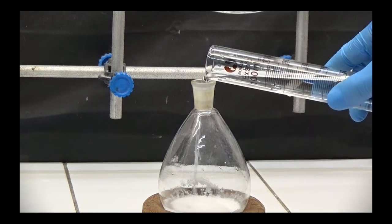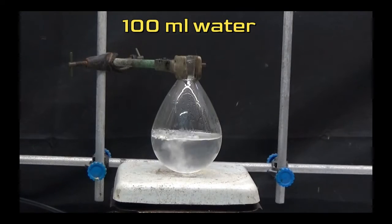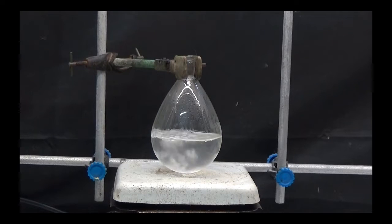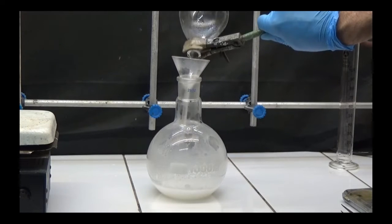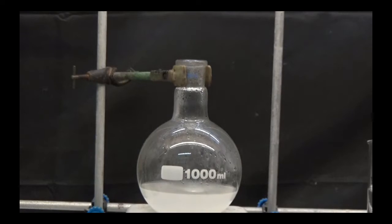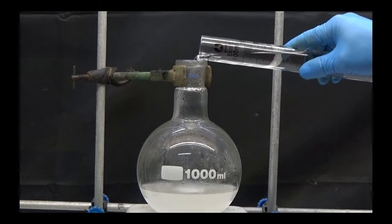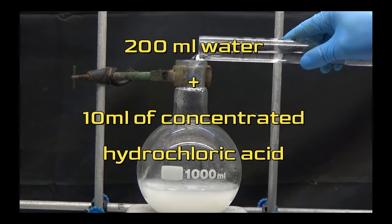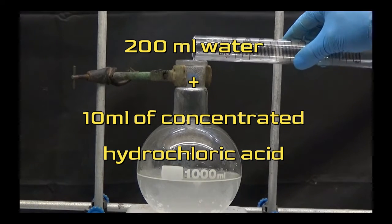Boil with 100ml of water for 10 minutes to remove all the residual methanol. Place the solution in a 1000ml flask. Add 200ml of water and 10ml of concentrated hydrochloric acid and heat at reflux for 1 hour.